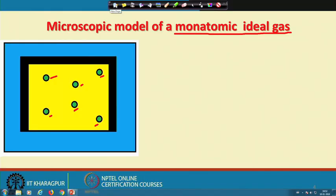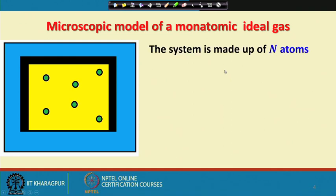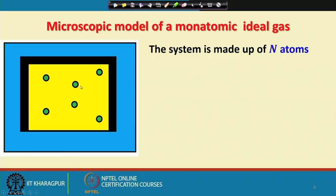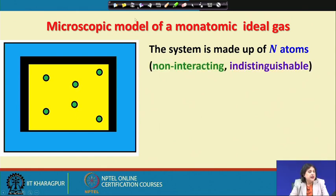The system is made up of N atoms. Are these atoms different from each other? The answer is no. If you take one mole of argon gas, there is no way to distinguish atom 1 from atom 2 — all of them are identical. So we are dealing with N identical particles at the microscopic level. Since it is an ideal gas, each particle does not know the others exist. Therefore, we have N atoms that are indistinguishable and non-interacting.